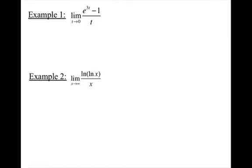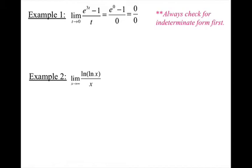Let's look at a couple of examples. Let's say I take the limit as t approaches 0 of (e^(3t) - 1) all over t. When I plug in 0, I would get an indeterminate form. In order to use L'Hopital's Rule, you always have to check the indeterminate form first. Sometimes algebra is not very obvious, such as this problem.